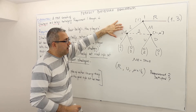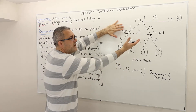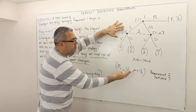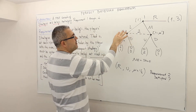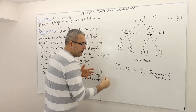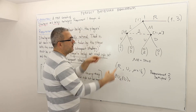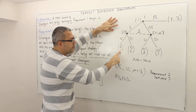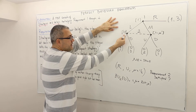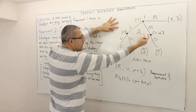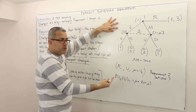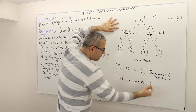Remember, requirement two basically says at the info set, player two should be best responding. Here, the opponent's strategy is irrelevant because there's no one else moving after player two. Therefore, player two should be best responding to her beliefs. Her belief is mu equals one half, meaning she believes she is at one node or the other with equal probabilities. If this is the case, her expected payoff of playing U is: she gets payoff one with probability mu and payoff two with probability one minus mu. So the expected payoff of U equals three over two.